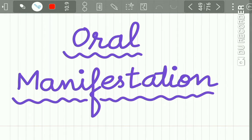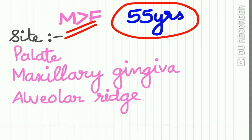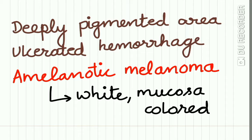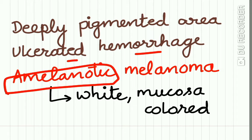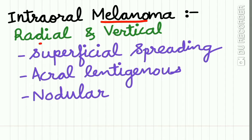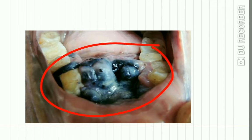Oral manifestation of malignant melanoma: males are affected more than females and it occurs at a mean age of 55 years. The most common intraoral site is the palate, maxillary gingiva, and alveolar ridge. It appears as a deeply pigmented area which may be ulcerated with haemorrhage. The amelanotic intraoral melanoma appears as a white mucosa-coloured lesion. Intraoral melanoma shows both radial and vertical growth phases; the most common kinds are superficial spreading, acral lentiginous, and nodular melanoma.